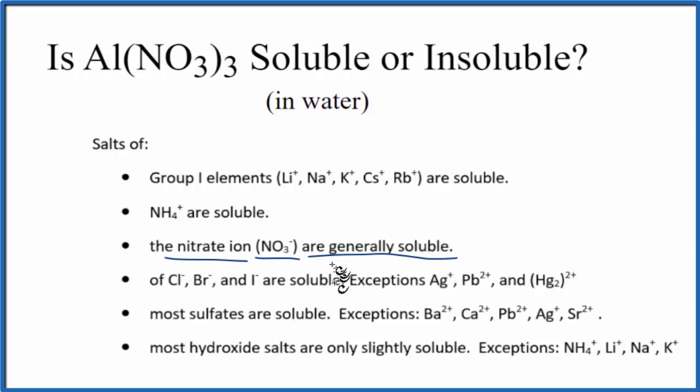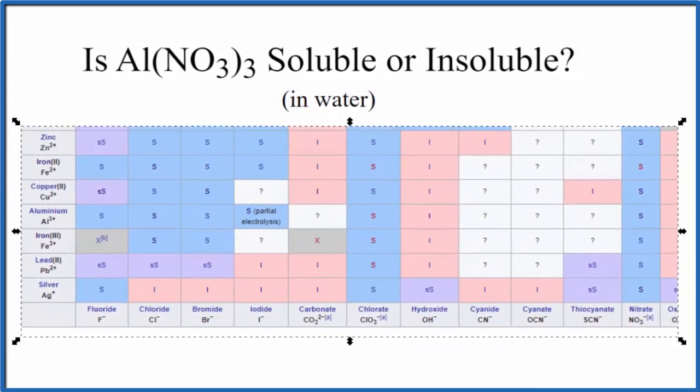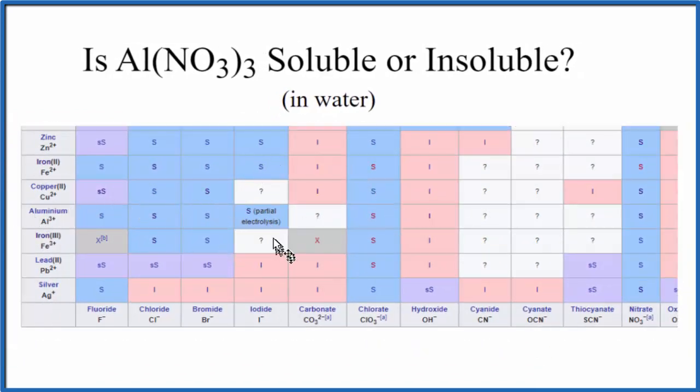So based on the solubility rules, this Al(NO3)3 should be soluble in water. There's another way we could tell. We could look at a solubility chart. So here's a portion of the solubility chart. There's a link in the description to the full table.